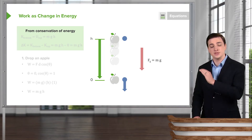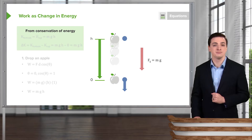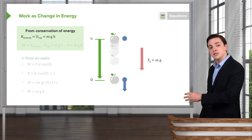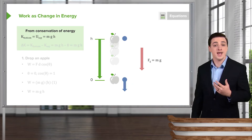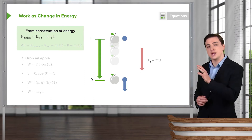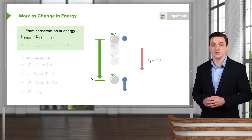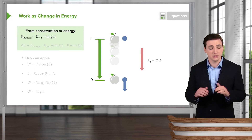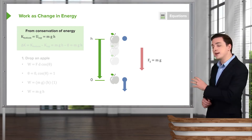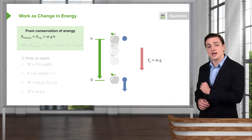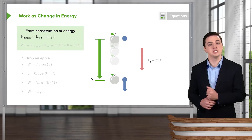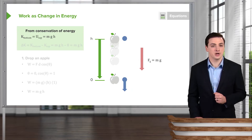The object starts with zero velocity and then gains a downward velocity at the end of its path. From conservation of energy, we know that the kinetic energy at the bottom of the path will be equal to whatever the potential energy was at the top of the path, because total energy is conserved. At the top of the path, its total energy is only potential energy, and at the bottom it has only kinetic energy and no potential energy. So the kinetic energy at the bottom equals mgh.